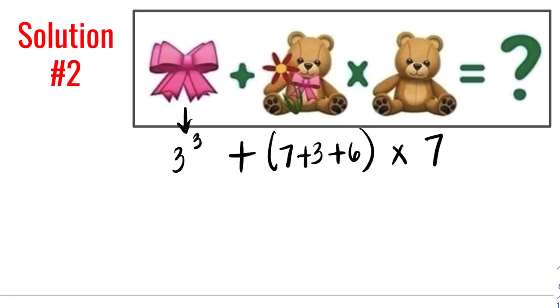For solution number 2, do you agree with this numerical expression? The only difference with solution 2 and solution 1 is the representation for the first picture, 2 ribbons. For solution number 2, it's 3 to the third power,